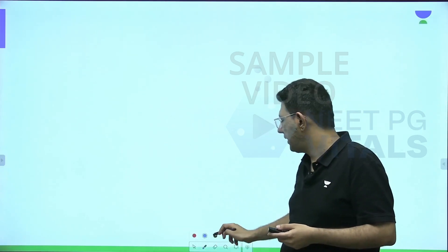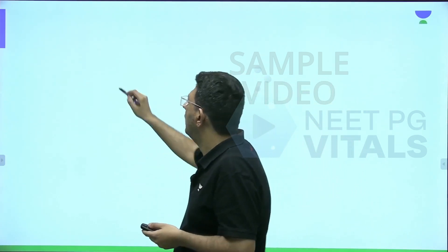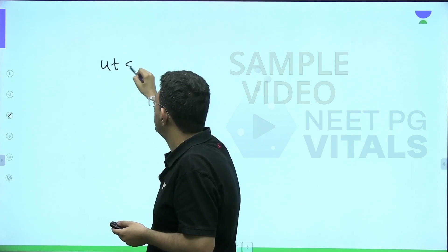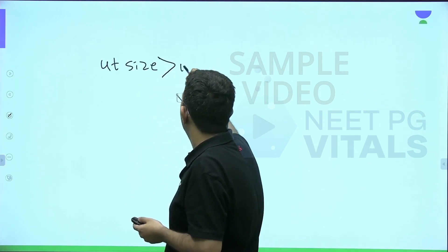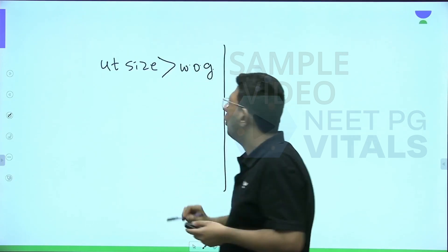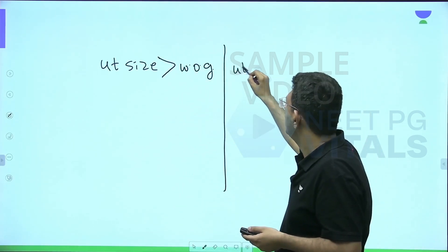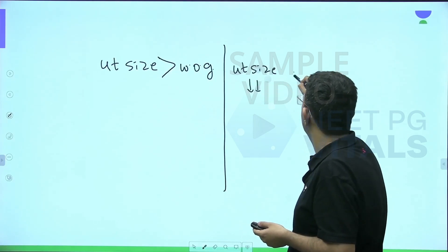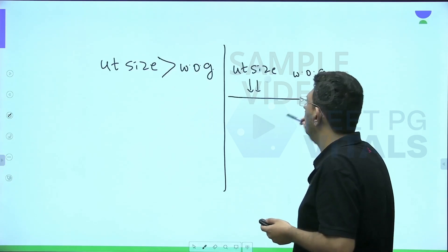Now let us take this opportunity to discuss a very important table for entrance exams as well as viva: which conditions have a uterine size more than the weeks of gestation, and simultaneously which conditions have a uterine size less than the weeks of gestation.